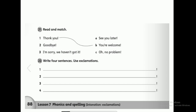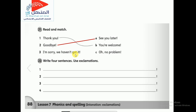Let's move to the next activity: read and match. You have exclamatory expressions — one, two, three — and you must match them with the correct reply. If somebody says 'thank you,' you reply 'you're welcome.' 'Goodbye' — you can reply 'goodbye' or 'see you later.' 'I'm sorry, we haven't got it' — reply 'oh, no problem.' In the last activity, write four exclamatory sentences using exclamation. For example: 'What a nice car! I really like it.' Or 'How nice this car is!' — you can start with 'what' plus adjective plus noun, or 'how' plus adjective. Think of three more sentences at home.